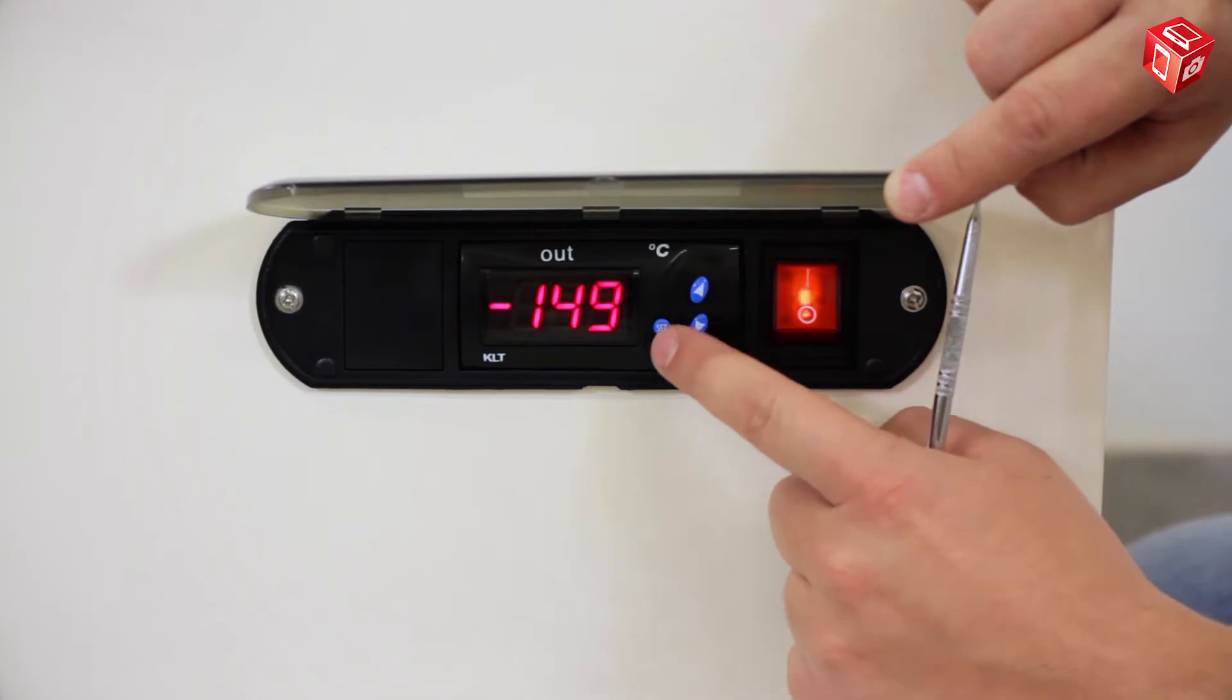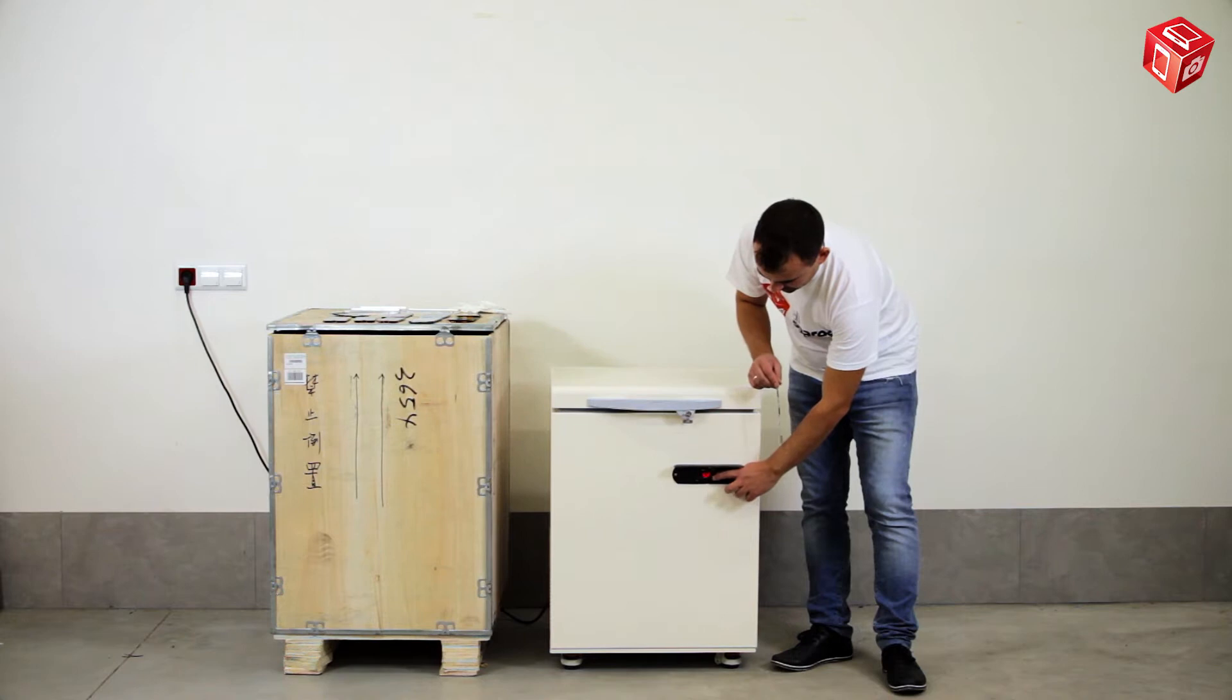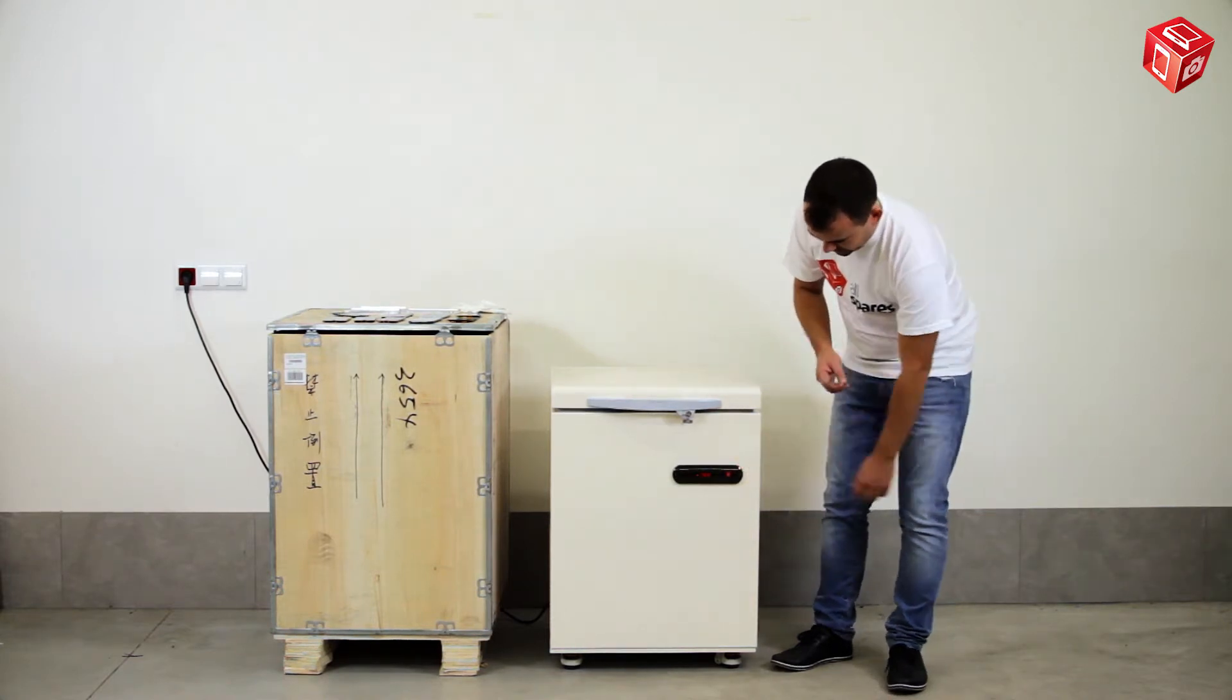To set the temperature, you press the set button. For example, we are now setting the temperature to negative 150 Celsius. This is the coldest possible temperature for this freezer.